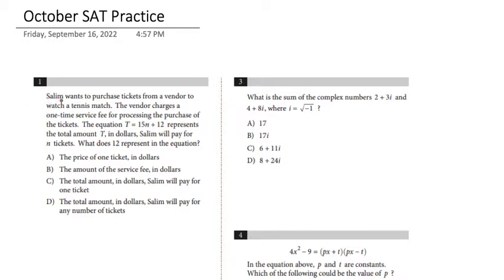Number 1: Solem wants to purchase tickets from a vendor to watch a tennis match. The vendor charges a one-time service fee for processing the purchase of the tickets. The equation t equals 15 times n plus 12 represents the total amount t in dollars Solem will pay for n tickets. What does 12 represent in the equation?